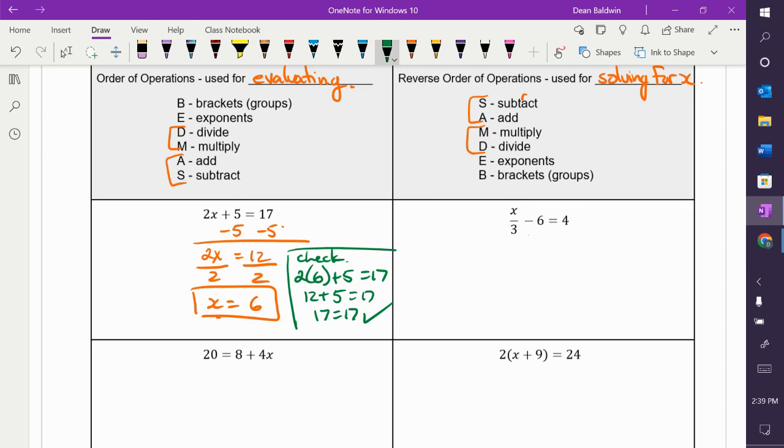I need to get rid of that negative 6 or subtracted 6. So, I have to? Add 6. Add 6. Both sides. Add 6. So, I get X over 3. 4 plus 6 is? 40. I'm getting to know 5. 10. And now I have X over 3 is equal to 10.